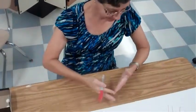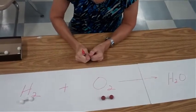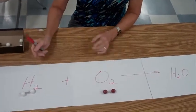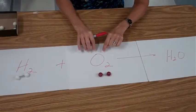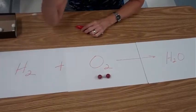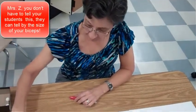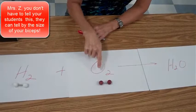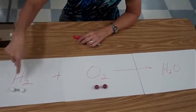Now I want to show you visually what balancing equations is all about. I have a hydrogen molecule and I have an oxygen molecule. Remember, these are diatomics. This represents two hydrogens and this represents two oxygens, making up one molecule of oxygen and one molecule of hydrogen.